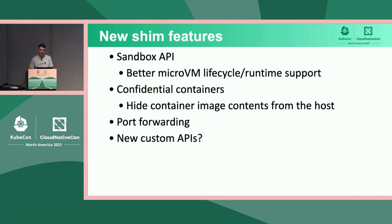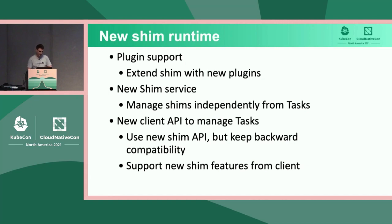There are some new use cases driving runtime changes we're working on. Sandbox API is an ongoing effort — the goal is to make micro VM or any other sandbox a first-class citizen in ContainerD. There is an effort with confidential containers to apply more security on container images so the host can't access sensitive data that the image may contain. There is also a proposal to add port forwarding API to our shims, and there are many more potential use cases we're not yet aware of. For the new runtime, we added plugin support to our shims in 1.6 beta — they use the same plugin system as the ContainerD daemon, so it's easy to add new services to the runtime and define dependencies between these plugins.